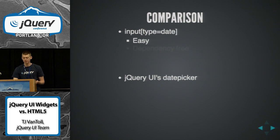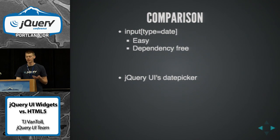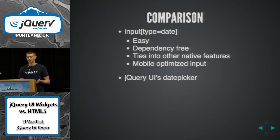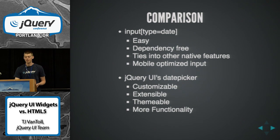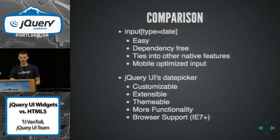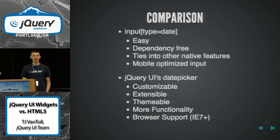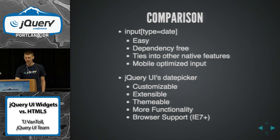Just a brief comparison: the native picker is easy, dependency-free, you get ties into native features, and it looks great on mobile. But UI's date picker is battle-tested, very customizable, there are a lot of pre-baked options, and you get broad browser support — UI's date picker works back to IE7, and the previous version works in IE6 if you need that.